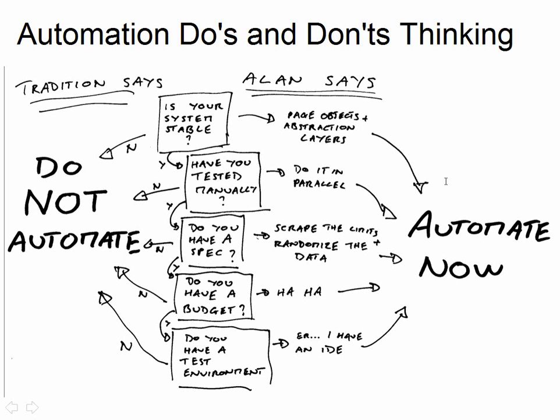When your system is not stable, you have abstraction layers. You have page objects. Ultimately, our tests are valid whether the system is ready or not. The things we want to do are the things we want to do. The implementation that underpins them might change, but our automated checks probably won't change. So we abstract our tests away from the implementation of the system.